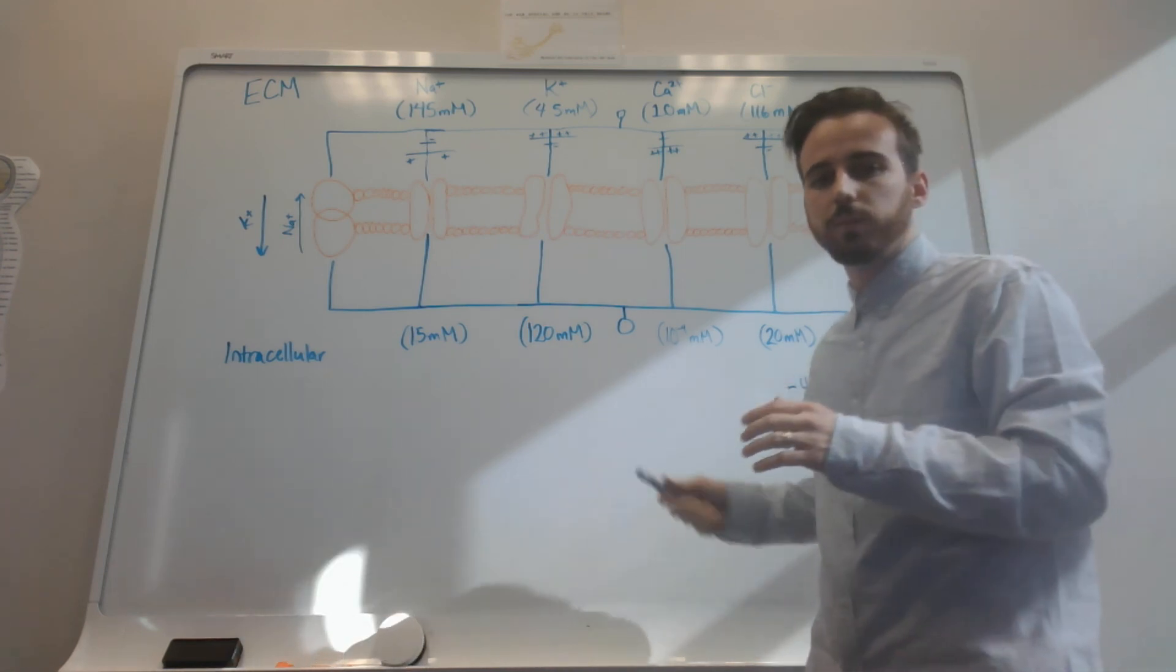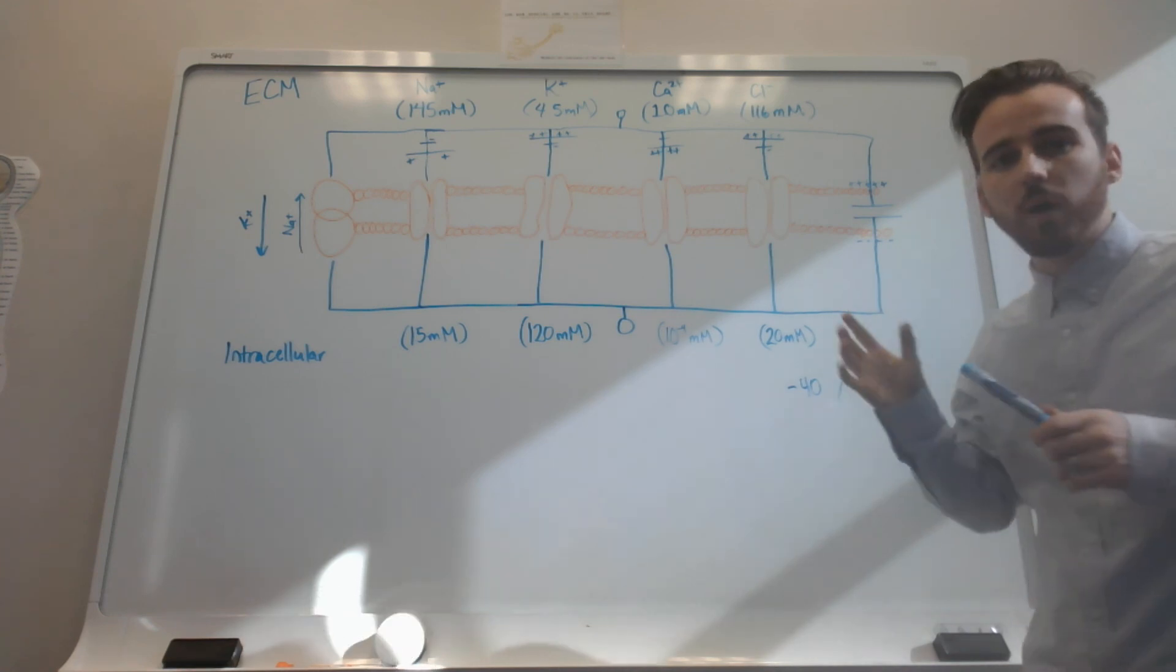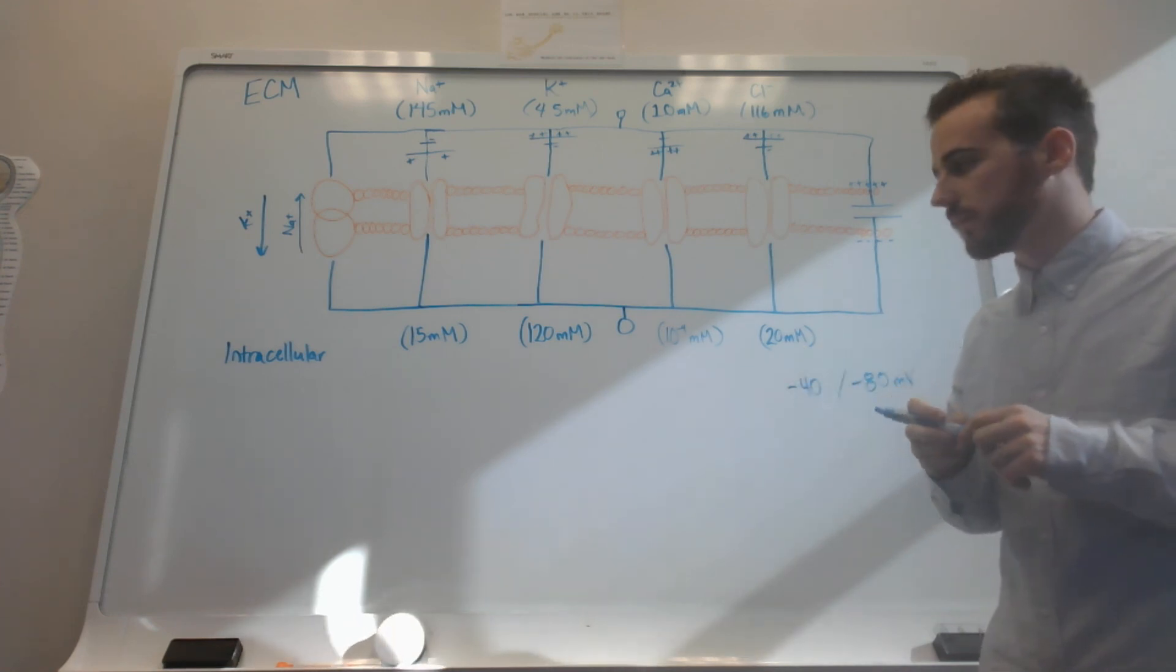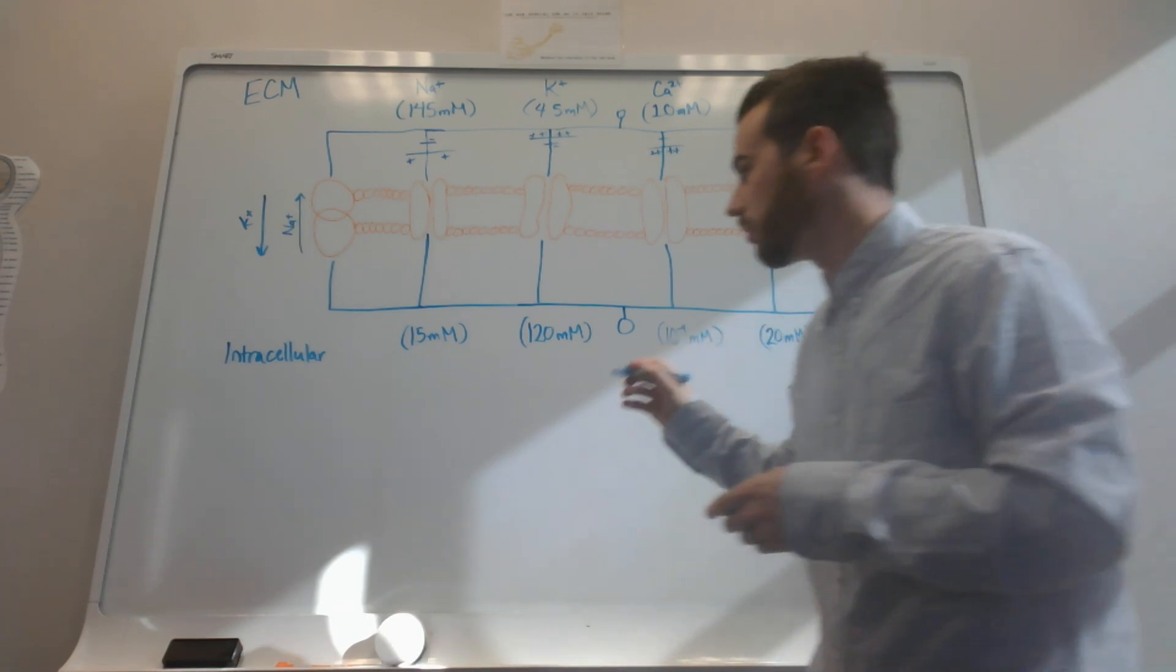There are exceptions, but that's pretty typical. There is an actual equation that we can use called the Goldman's equation that will tell us exactly what resting membrane potential should be.